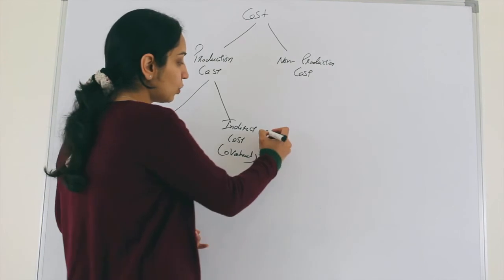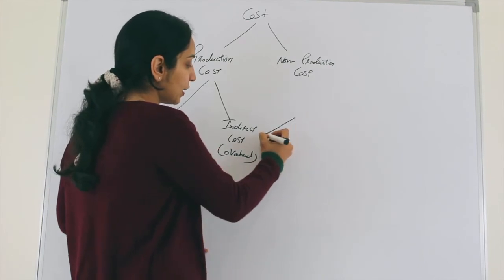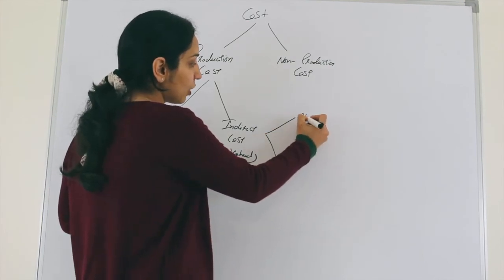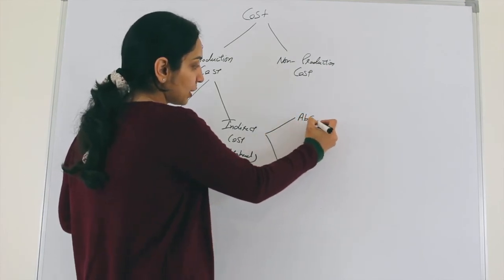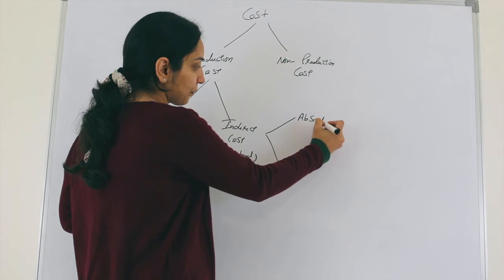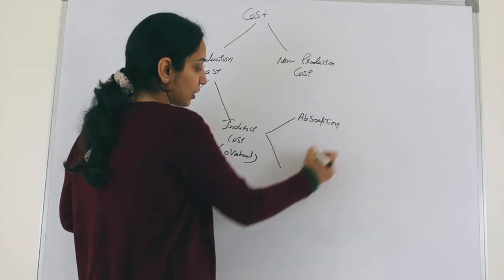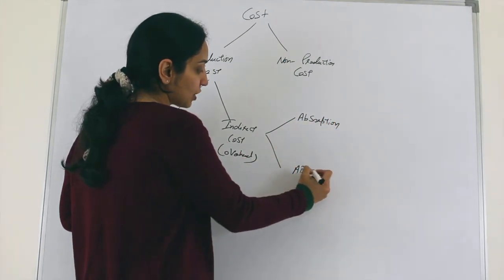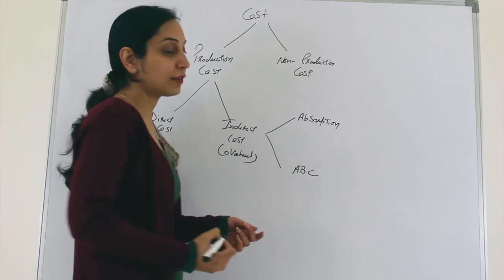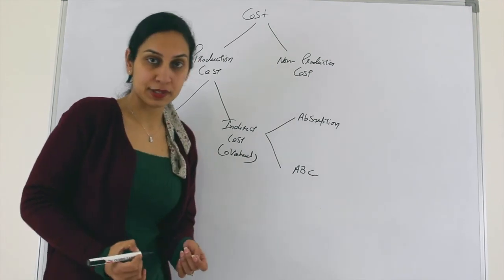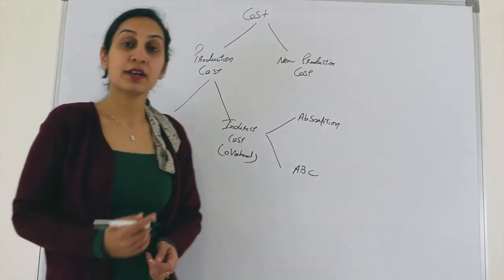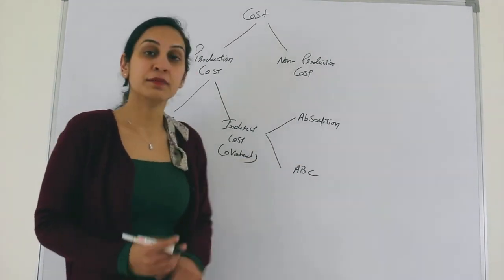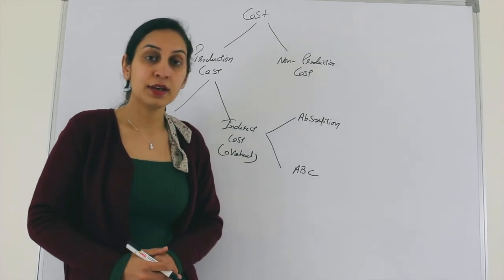There are two methods to classify indirect cost. One is called the absorption method and the second is called activity-based costing — in short, ABC. In our next sessions we will be talking about both of these in much more detail.